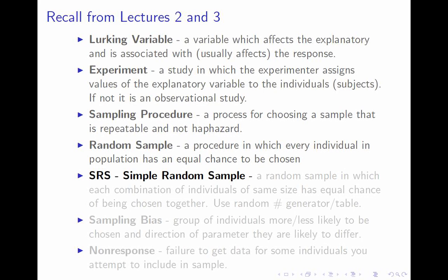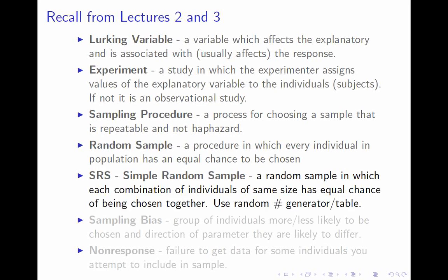We talked about several different kinds of random samples. The one we will most commonly deal with in this class is a simple random sample, or SRS. It has a technical definition: each combination of individuals of the same size has an equal chance of being chosen together. More mechanically, it comes down to listing everything in the population, assigning them numbers, and picking numbers randomly using a random number table or generator. A simple random sample is not better than other kinds of random samples — it is easier to work with, which is why we focus on it.